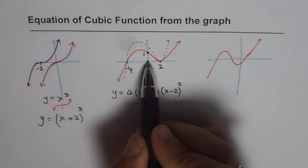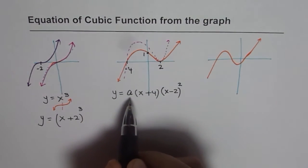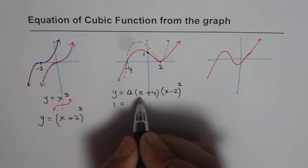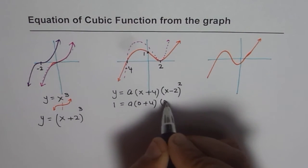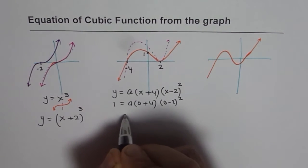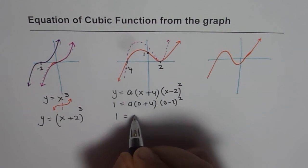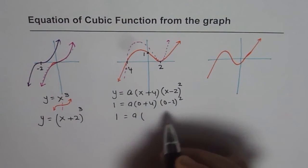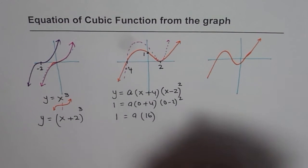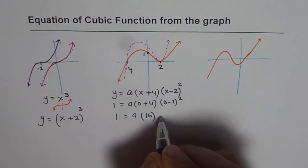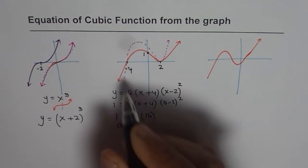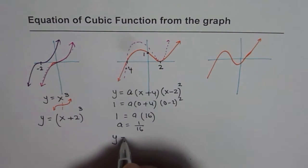So that means when x is 0, y is 1. This helps to find the value of a. So we'll put y as 1 when x is 0. So that means 0 plus 4 times 0 minus 2 whole square and that gives us 1 equals to a times 4, 2 square is minus 2 square is 4, 16. So from here, we get a equals to 1 over 16.